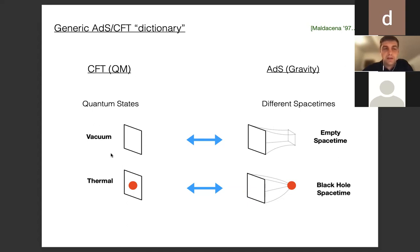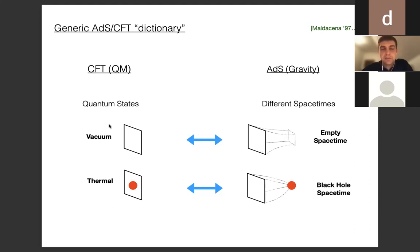AdS/CFT gives us a dictionary between quantum states — say the vacuum or thermal state — of quantum mechanical systems, in particular many-body systems at criticality, dubbed CFTs (conformal field theories). The states in CFTs are identified with geometries in d+1 dimensions with negative cosmological constant. For example, the vacuum state is dual to empty spacetime and the thermal state is dual to a black hole in AdS. The dictionary tells us how to compare observables computed using density matrices in the quantum mechanical system and match them perfectly with gravity in AdS.